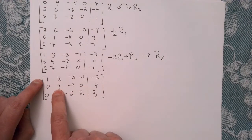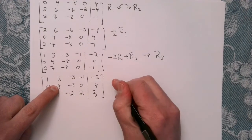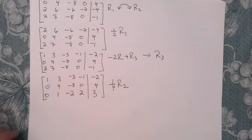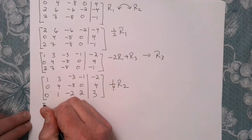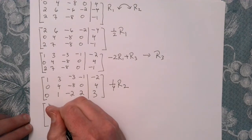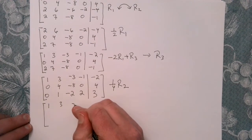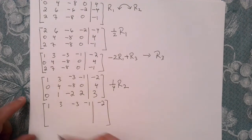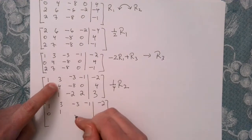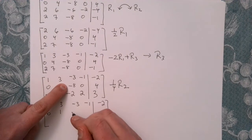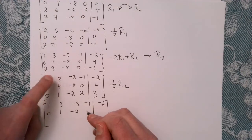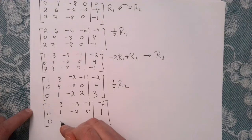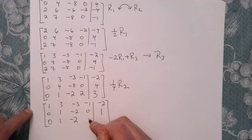For the next row, let's try to get a pivot by taking 1/4 of row 2. Row 1 stays the same — it's row 2 that's changing. So 1/4 of 4 is 1, 1/4 of minus 8 is minus 2, 1/4 of 0 is 0, and 1/4 of 4 is 1. Row 3 stays the same.